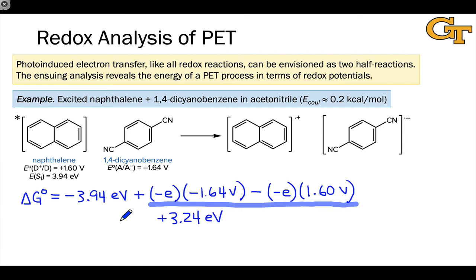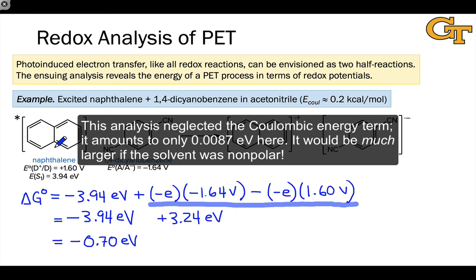However, notice what happens when we throw photoexcitation into the mix. We've gone from positive 3.24 electron volts to a total delta G for the photoinduced electron transfer of negative 0.7 electron volts.